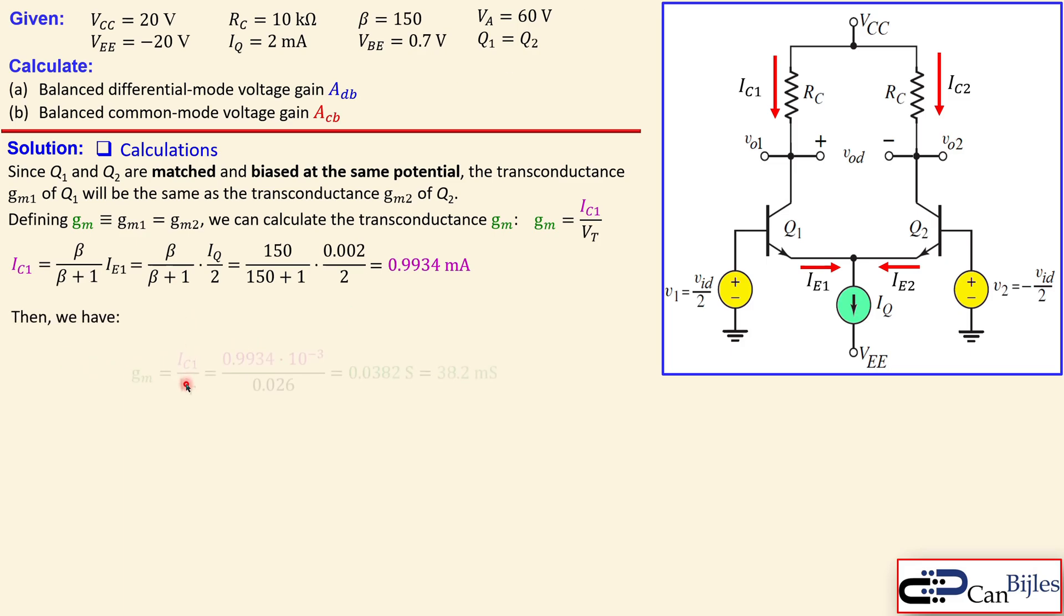And then we can say the following for our transconductance formula, because we know the IC1 and this VT is our thermal voltage. It is at room temperature, approximately 300 Kelvin, this value 0.026 or 26 millivolts. And you calculate that, you get now here 0.0382 siemens or 38.2 millisiemens. So we have now our transconductance. So that is really important.